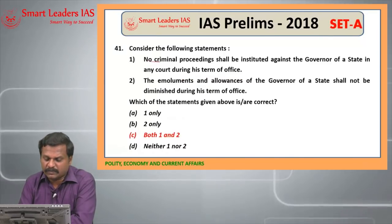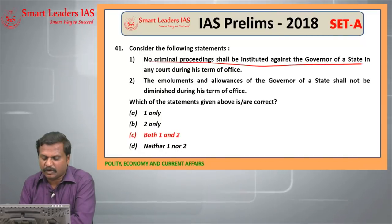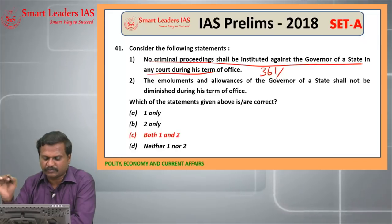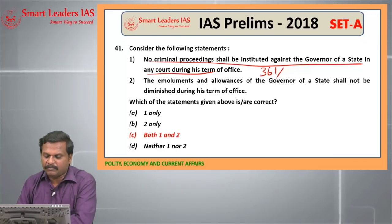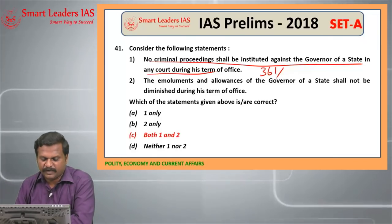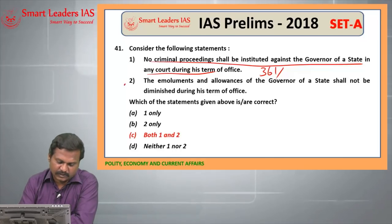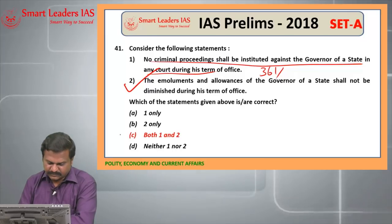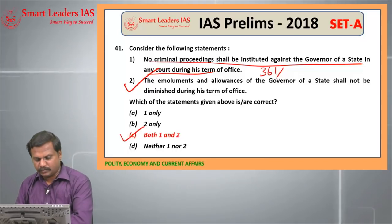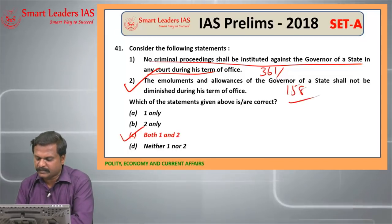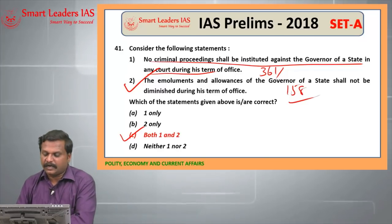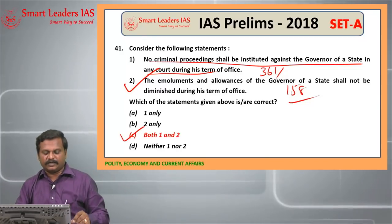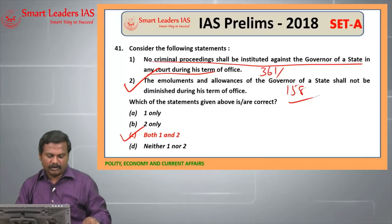41st question: no criminal proceeding shall be instituted against the governor of the state during his term of office — under Article 361, this is a right statement. The emoluments and allowances of the governor shall not be diminished during his term of office — this is also a right statement under Article 158. So the answer for this question is C, both 1 and 2.